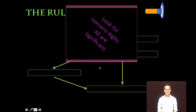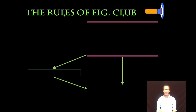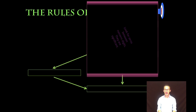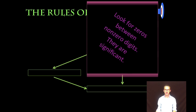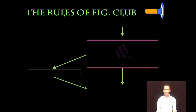Rule number one: all non-zero digits are significant — 1, 2, 3, 4, 5, 6, 7, 8, 9. If it's not a zero, it must have been measured and therefore is significant. Easy enough, but things get tricky when we start having zeros. Rule number two of big club: look for zeros between non-zero digits. That means they must also have been measured and are therefore significant.